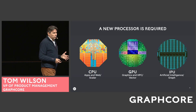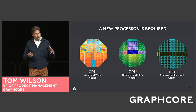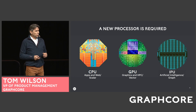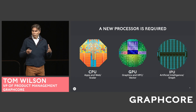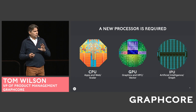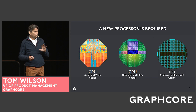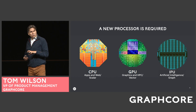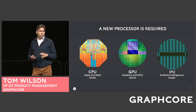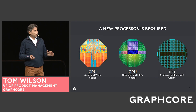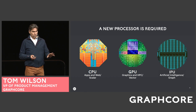We're used to CPUs, which were developed for scalar processing and running applications, and the GPU for graphics processing with additional cores kind of retrofitted to help with dense matrix math. But the Intelligence Processing Unit, the IPU, has been developed from the ground up for these kinds of machine intelligence workloads to enable a more flexible approach to these kinds of models.